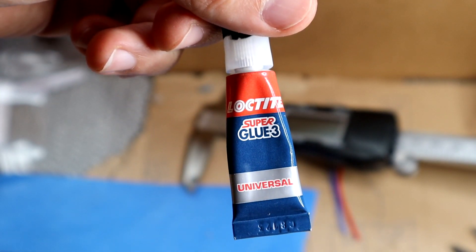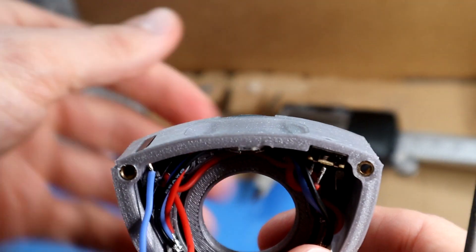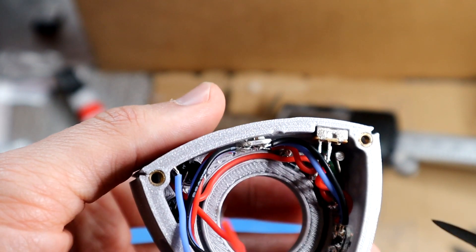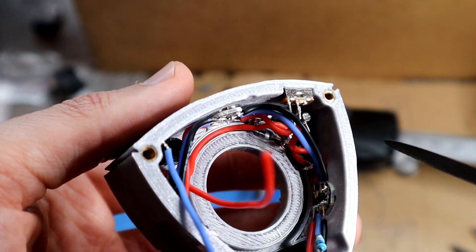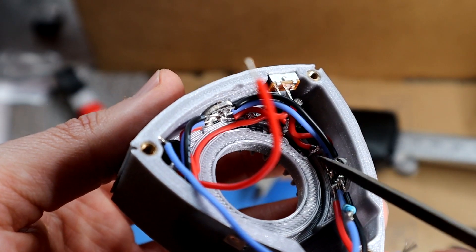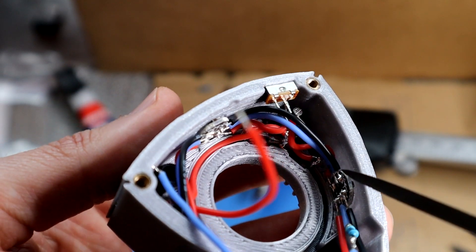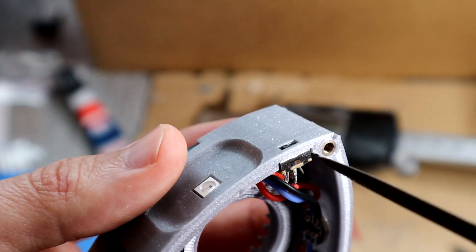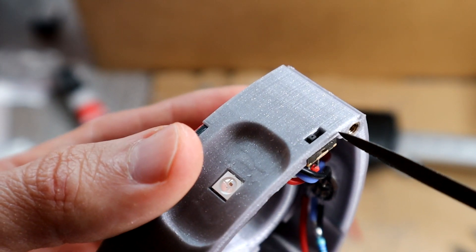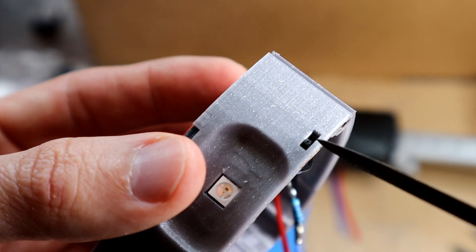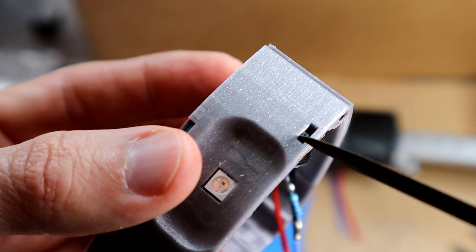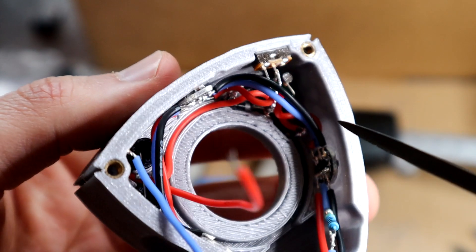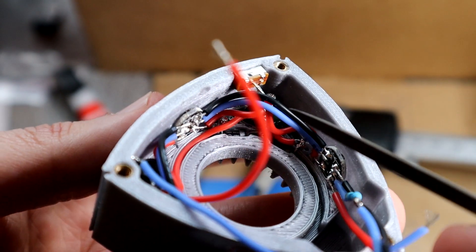This is the glue that I'm using, the Loctite Super Glue 3, that's good for getting into all these little spaces, like for the capacitors and gets everywhere. But with this, we don't want a lot of liquid glue going inside of here, we want to be able to move this back and forth very easily.